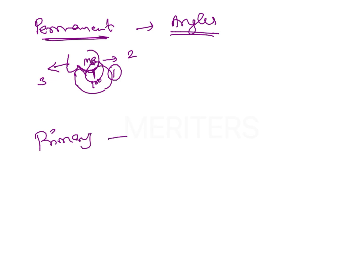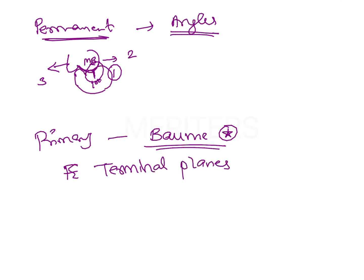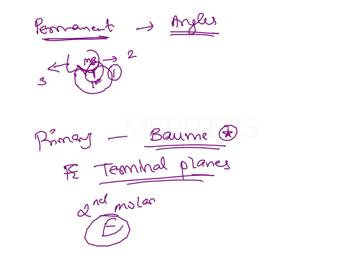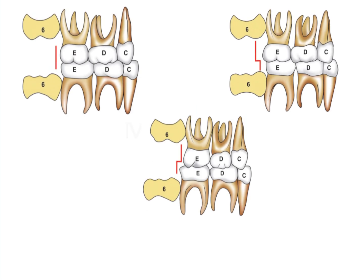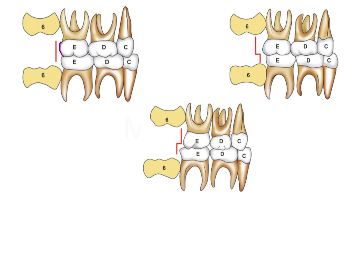In the primary dentition, the molar relationship classification was given by Bohm — this is important and could be asked as a separate exam question. Bohm's method is based on terminal planes, which are the distal aspects of the maxillary and mandibular second deciduous molars (tooth E). If the distal surfaces of both second deciduous molars are in the same line, it is the flush terminal plane, the most common type, seen in about 76% of the deciduous dentition.